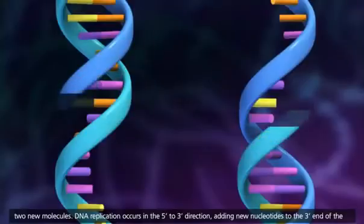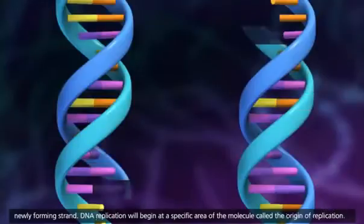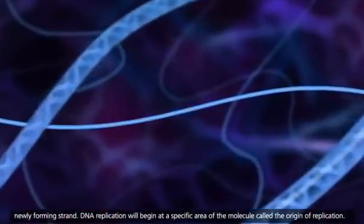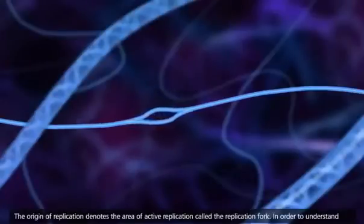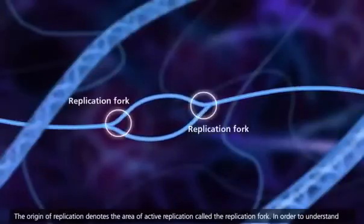DNA replication occurs in the 5' to 3' direction, adding new nucleotides to the 3' end of the newly forming strand. DNA replication will begin at a specific area of the molecule called the origin of replication. The origin of replication denotes the area of active replication called the replication fork.